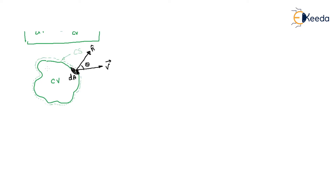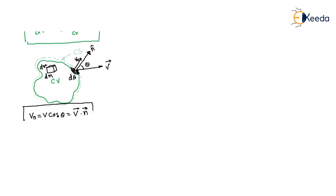Take an elemental mass of volume dV and mass dM — this is the elemental mass of the control volume. The normal velocity component vN equals v cos theta, and what is v cos theta? It equals v vector dot n vector — the unit normal vector. So vN equals v dot n.